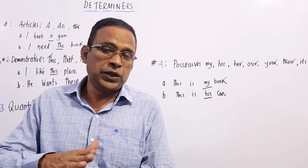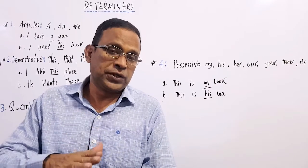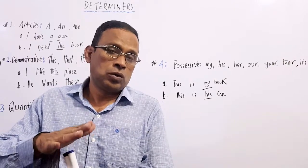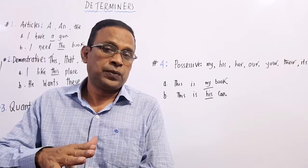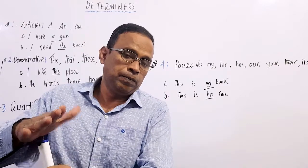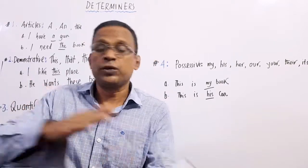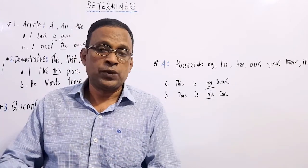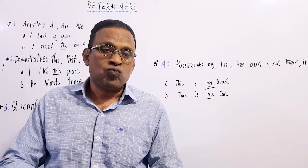A determiner is a word or a group of words which modify a noun or noun phrase, which come before a noun or noun phrase to modify or to specify, identify, or quantify a noun. So there are about 50 determiners in English language.